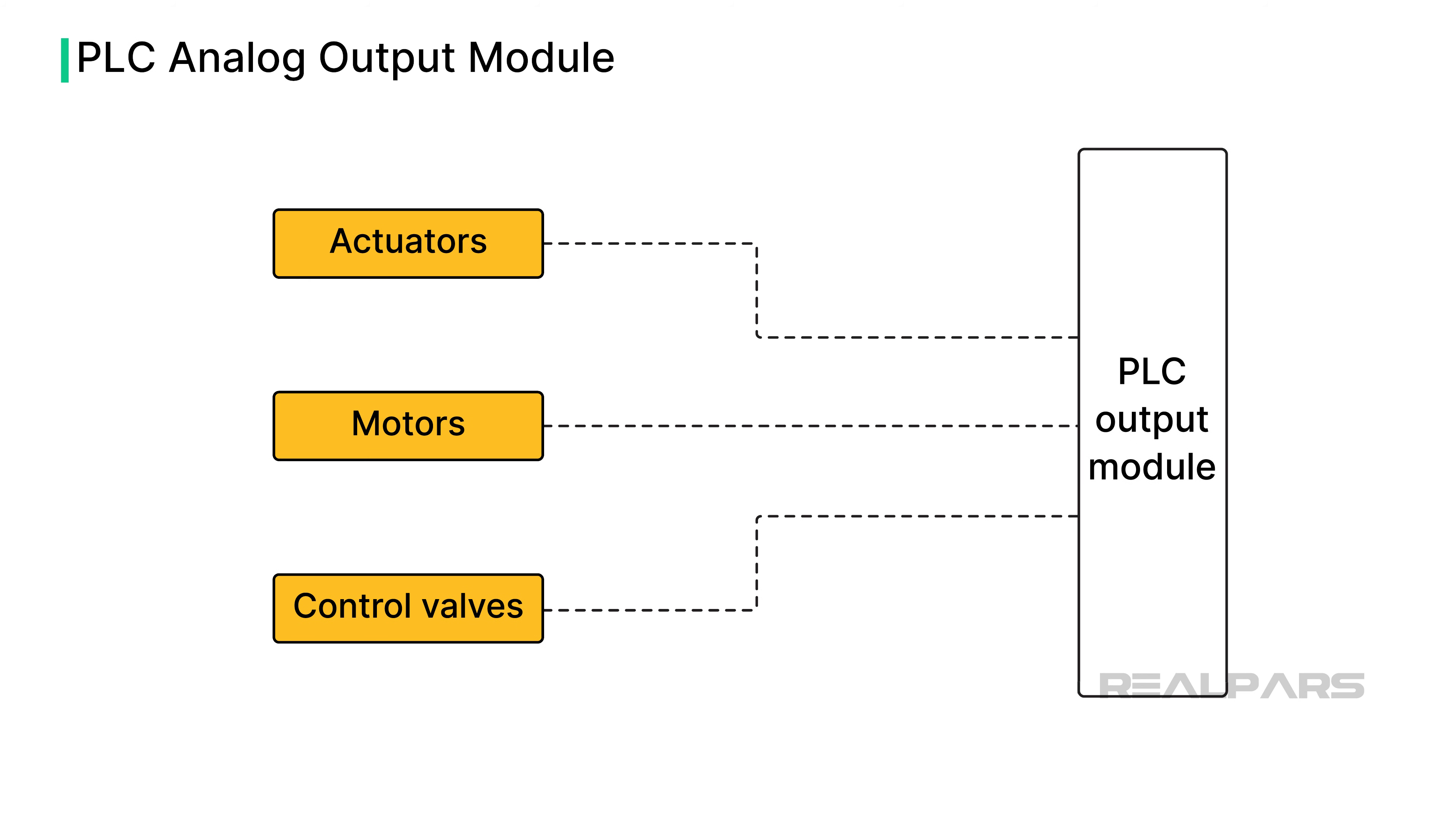Let's move on to analog PLC output modules. Analog PLC outputs control devices such as actuators, motors, and control valves. Usually the module itself does not provide the drive for the controlling device, only the control signal.